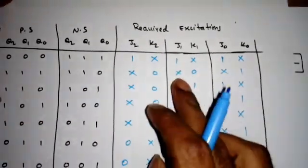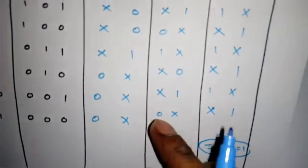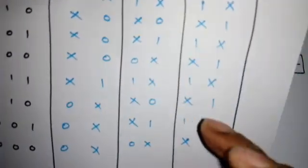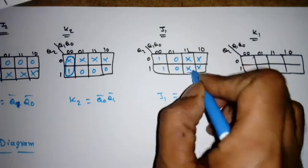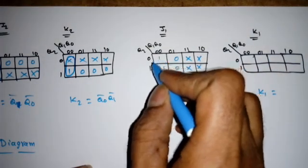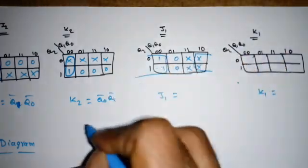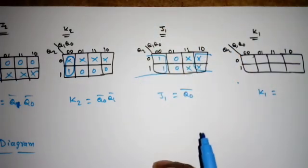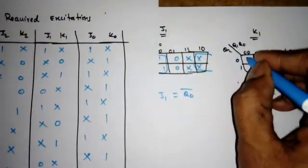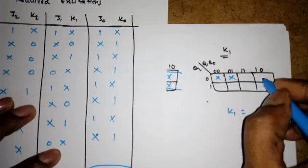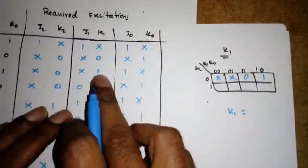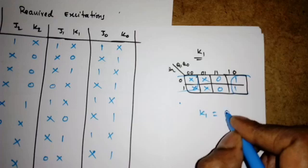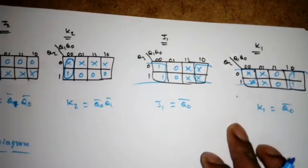For J1: triple zero is 1, then filling from the bottom gives two don't cares at certain positions and two more don't cares at 1-0. Using those don't cares to form a quad gives J1 = Q0-bar. For K1: triple zero is don't care, filling from the bottom gives a pattern where a quad can be formed, again yielding K1 = Q0-bar. So J1 and K1 are the same, just like J2 = K2 and J0 = K0.